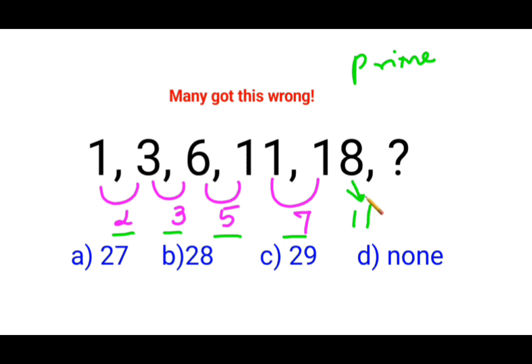So you should be adding 11 to 18. And when you do that, the answer you get is 29. Option C is my answer for this particular question. That's it for today. I will see you in the next video.